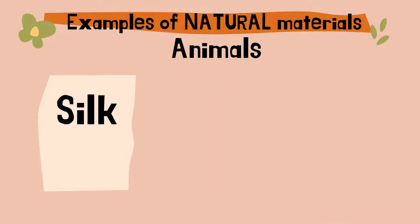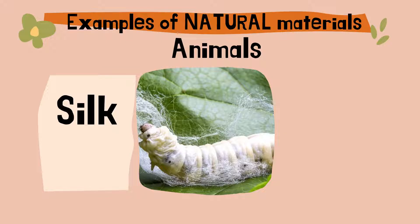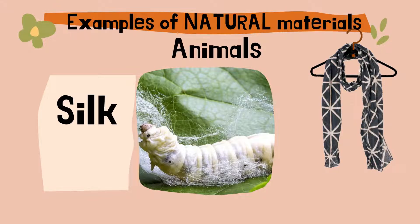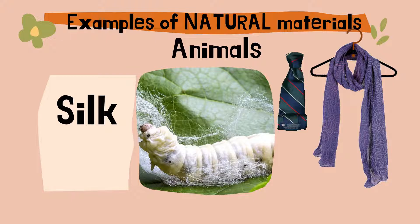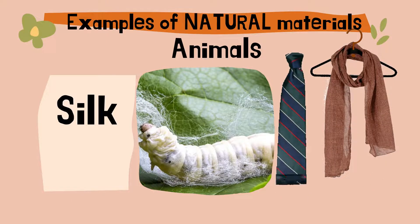Another natural material that comes from animals is silk. Silk comes from silkworms — it comes from the cocoons that silkworms spin. They are the young of a kind of moth. People use silk to make silk scarves, silk ties, and many other types of cloth.